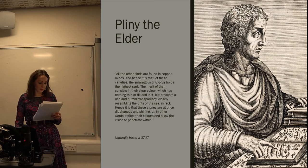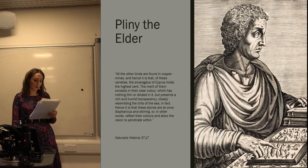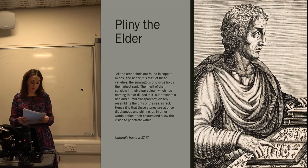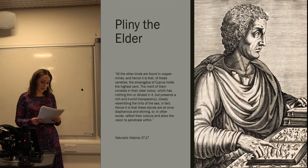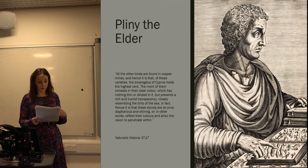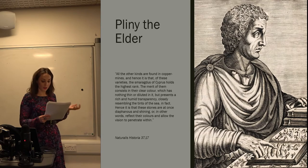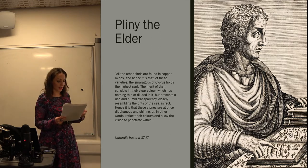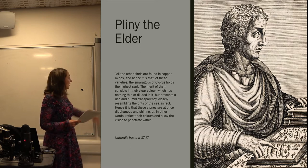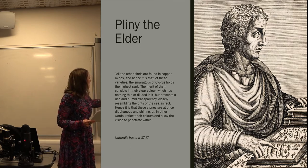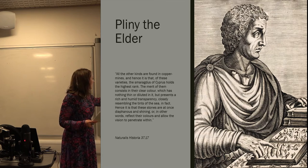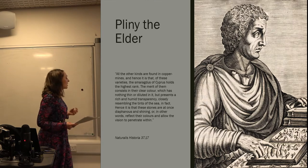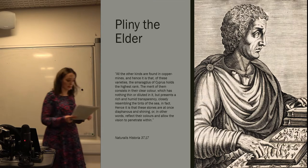From Rome itself, Pliny's extensive treatise on the natural world provides multiple examples of colour from this period. Colour is a constant refrain and often a marked characteristic used by Pliny to explain the world around him. To Pliny, the origin, quality or effectiveness of anything from precious stones to medicine is revealed in the colour it presents, and so acts as an integral element of the ancient visual world. He says of emeralds: 'the merit of them consists in their clear colour, which has nothing thin or diluted in it, but presents a rich and humid transparency closely resembling the tints of the sea.'